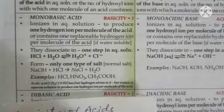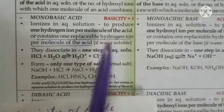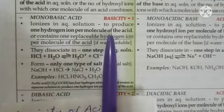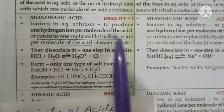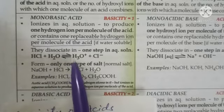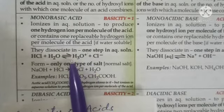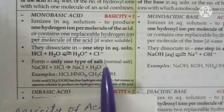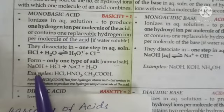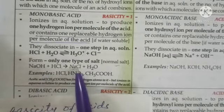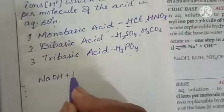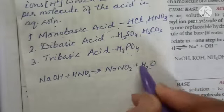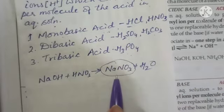Monobasic acids are acids which contain one replaceable hydrogen ion per molecule, or which produce one hydrogen ion per molecule in aqueous solution. For example, hydrochloric acid dissolved in water gives one hydrogen ion. Monobasic acids always form one type of salt only — normal salts. For example, HCl reacting with NaOH gives sodium chloride and water, and NaOH plus HNO₃ gives NaNO₃ and water.